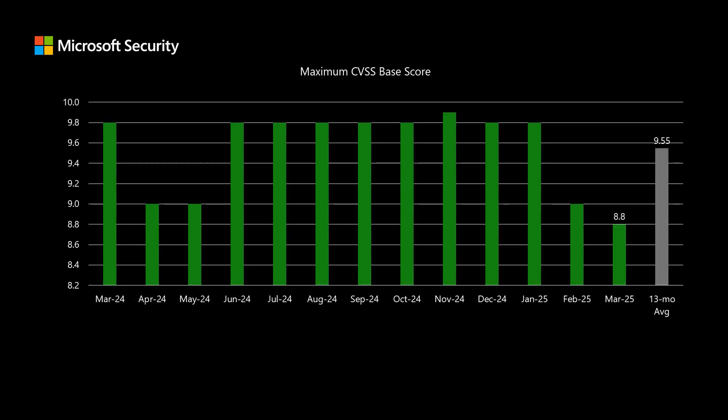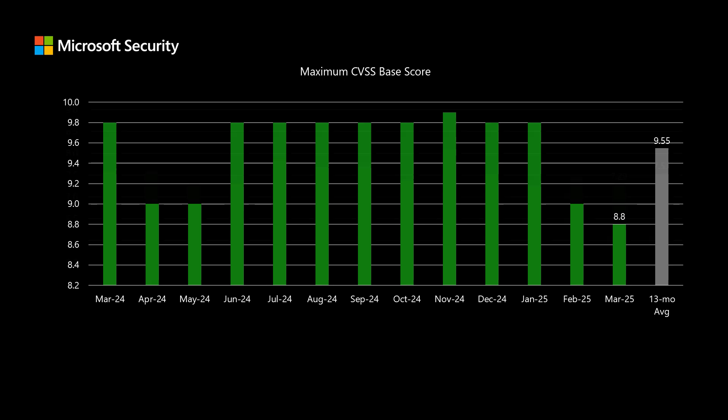Next I'll move into scoring, where Microsoft uses the Common Vulnerability Scoring System, or CVSS. This is a scoring methodology that allows software, hardware, and firmware vendors to compare and contrast different vulnerabilities on the same scale, which goes between 0 and 10 where 10 represents the most risk. The highest scored CVE from today's release is 8.8, which is quite a bit lower than the average high score over the past year of just over 9.5.